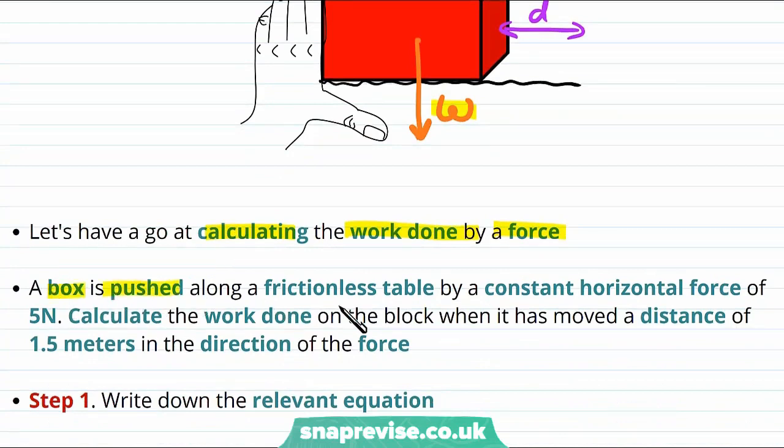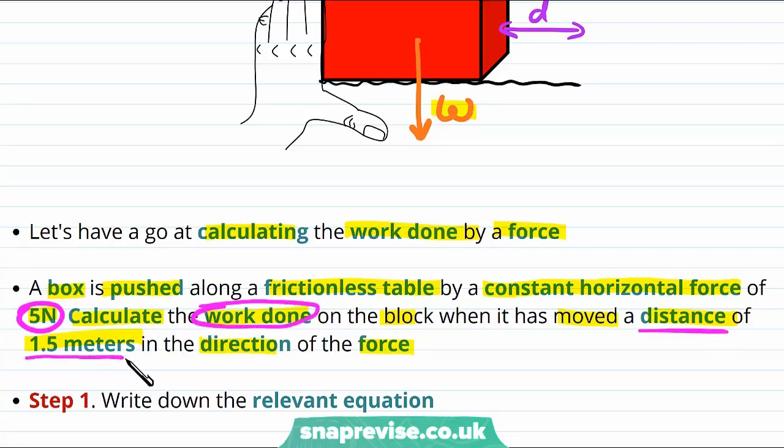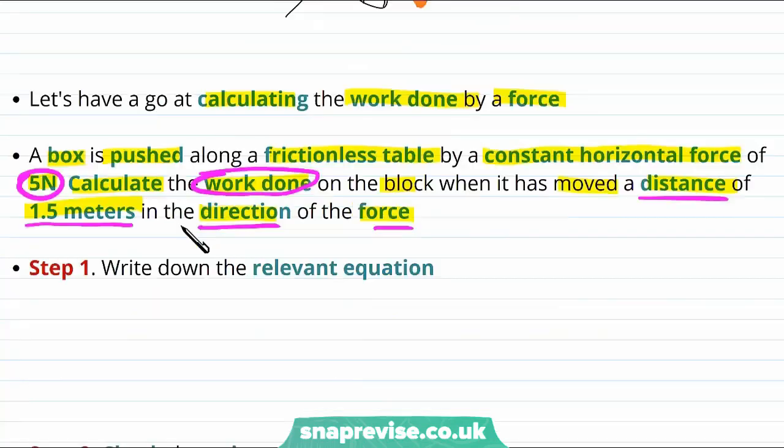Let's imagine a box is pushed along a frictionless table by a constant horizontal force of 5 Newtons. We want to calculate the work done on the block when it has moved a distance of 1.5 meters in the direction of the force. That feels like a lot of information, so let's pick out the key parts of this question. We know there's a constant horizontal force of 5 Newtons. We want to know the work done. And we know it's moved a distance of 1.5 meters in the direction of the force. Okay, so we have the distance and we have the force, so we can calculate the work done using our equation.